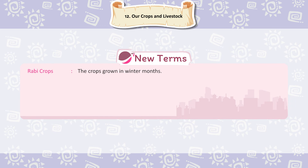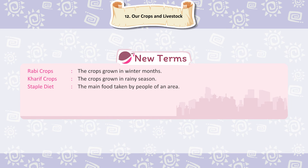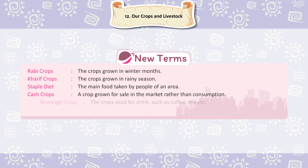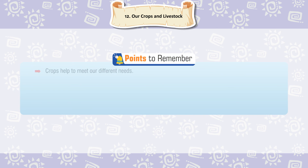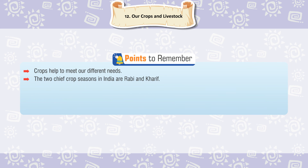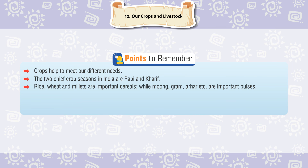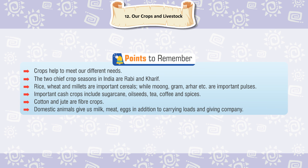New Terms: Rabi crops — crops grown in winter months. Kharif crops — crops grown in the rainy season. Staple diet — the main food taken by people of an area. Cash crops — crops grown for sale in the market rather than consumption. Beverage crops — crops used for drink, such as coffee and tea. Livestock — animals used for food or transport. Points to remember: Crops help meet our different needs. The two chief crop seasons are Rabi and Kharif. Rice, wheat and millets are important cereals. Moong, gram, arhar, etc. are important pulses. Important cash crops include sugarcane, oil seeds, tea, coffee and spices. Cotton and jute are fiber crops. Domestic animals give us milk, meat and eggs, in addition to carrying loads and giving company.